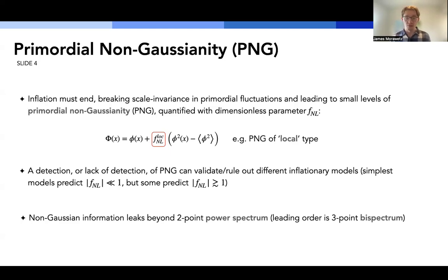The most simple type of PNG that we consider is local type, which has the configuration space representation shown below, where we start off with some Gaussian distributed potential, and we perturb it with quadratic terms in the potential using this dimensionless parameter. And a detection or lack of detection of PNG is a critical tool in being able to validate or rule out different inflationary models. The simplest models typically predict values that are much less than one, which means we wouldn't be able to detect them in practice. But some models also predict values that are of order one, which with slightly tighter constraints than we have now would be detectable in the future.